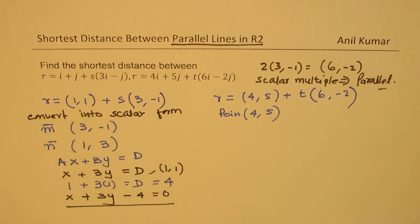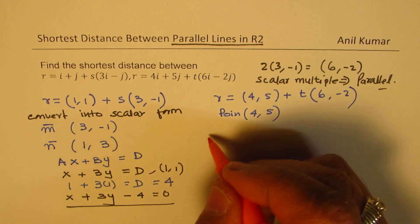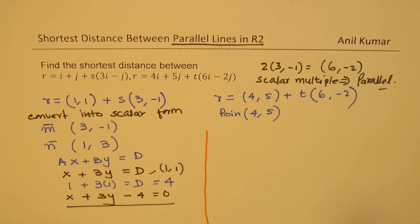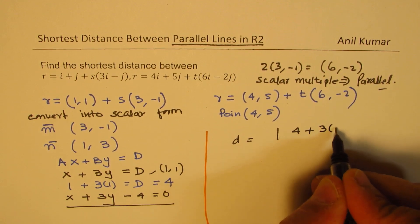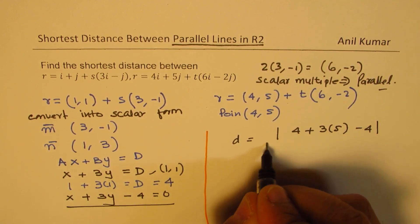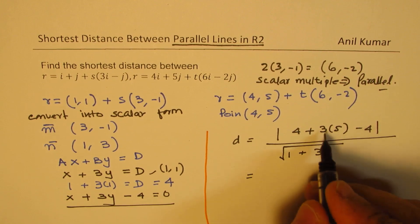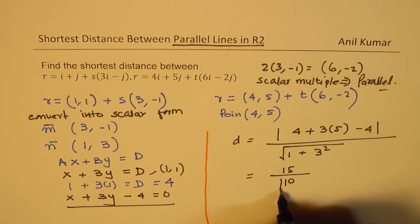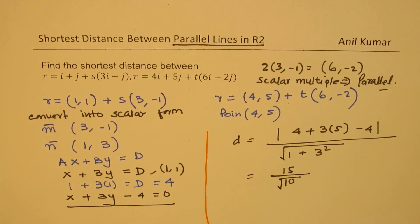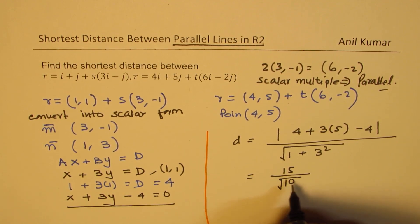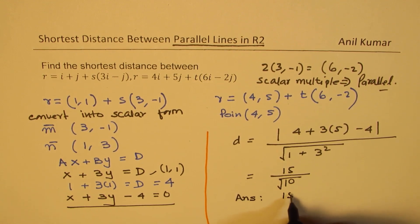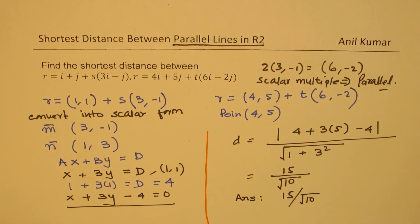Similarly, the second line through (4, 5) with the same normal gives x plus 3y minus D₂ equals 0; substituting (4, 5): 4 plus 15 equals 19, but we use the point (4, 5) directly. The distance equals absolute value of (4 plus 3 times 5 minus 4) over square root of (1² plus 3²), giving 15 over square root of 10.